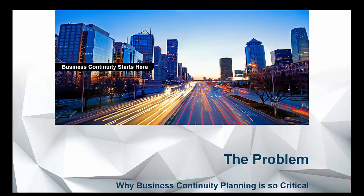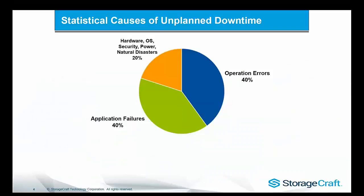The first thing I always like to start these discussions with is actually understanding what the problem is. Why is business continuity planning so critical and how will best practice fit into that? So the first thing is understanding where the actual problems are happening. We've got operational and application failures — this sort of 80% is much more likely to happen. Ransomware would sit across this, human error, Windows updates, changes to systems, upgrades, application configuration — that kind of thing.